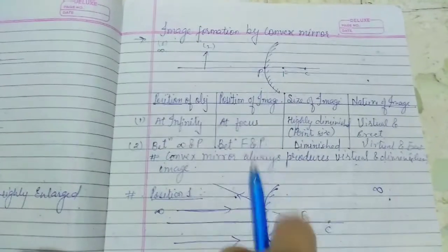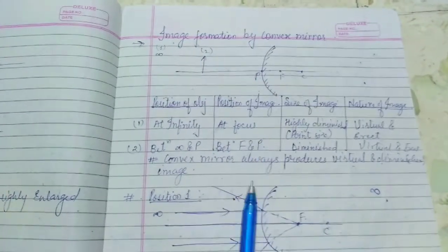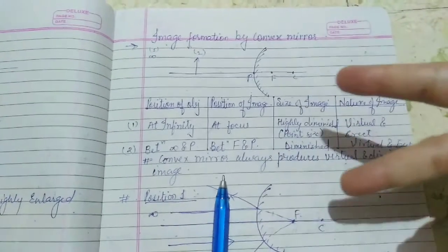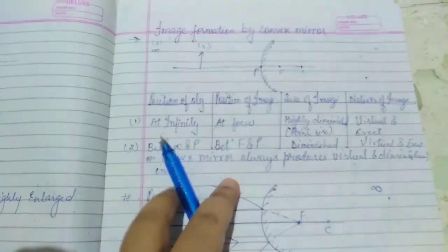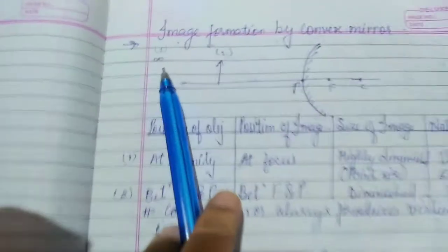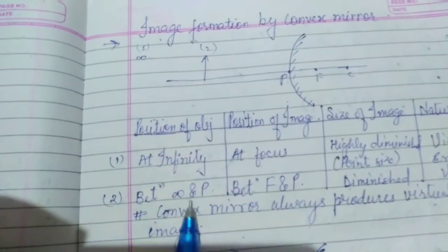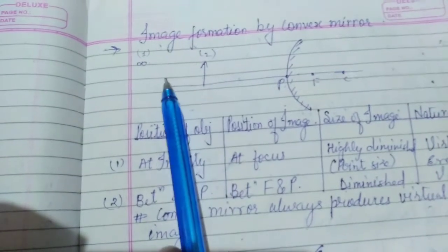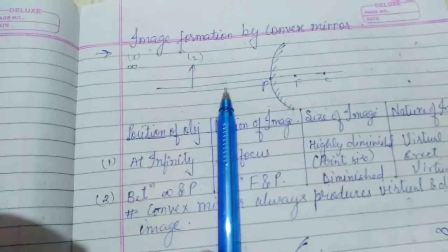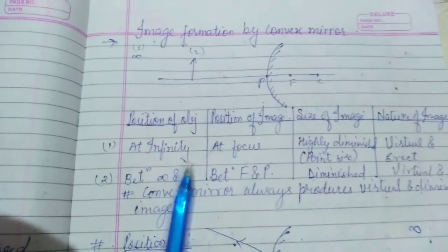Hello students, today we are going to see the image formation by convex mirror. In the previous topic we saw six cases of image formation by concave mirror. For the convex mirror, only two cases are there. The first case is when the object is placed at infinity, and the second position is when the object is between infinity and pole P.